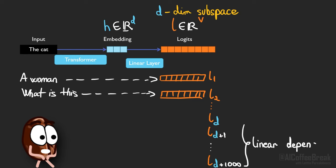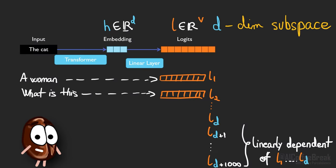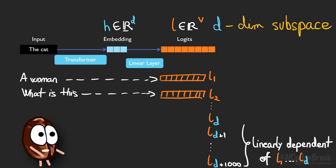To span a D-dimensional subspace, one only needs D and not V vectors. So if we continue to query, for example, D plus 1000 times, we will eventually observe that new logits are becoming more likely to be linearly dependent on logits from previous queries. This is linear algebra: linearly dependent vectors can be constructed from the other vectors. So from the D+1000 logits we sampled, approximately D of them are linearly independent and form a basis for the logit space, because even if the logit space is V-dimensional, all the logit vectors lie in a D-dimensional subspace — they just need a D-dimensional set of basis vectors to be defined by.